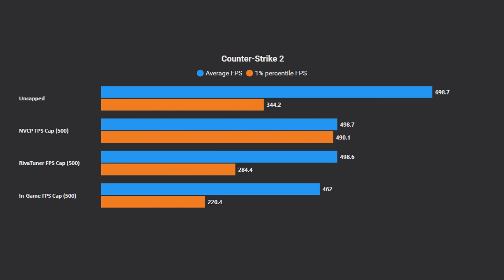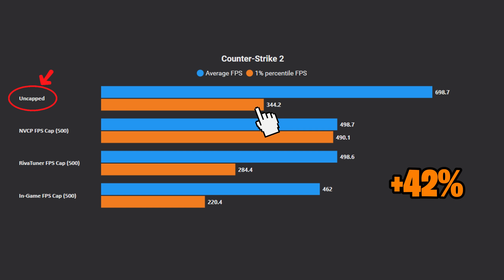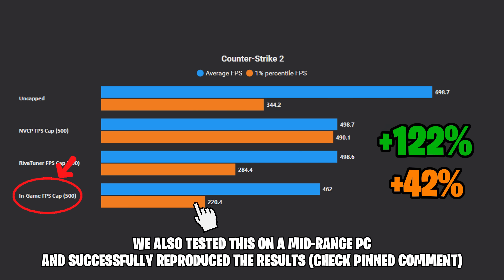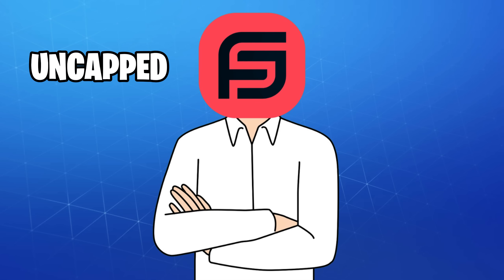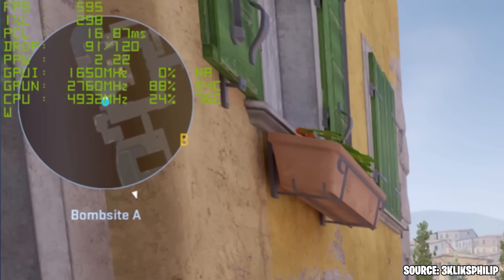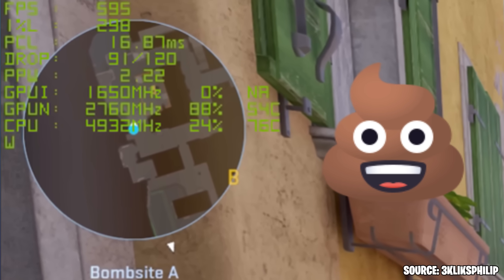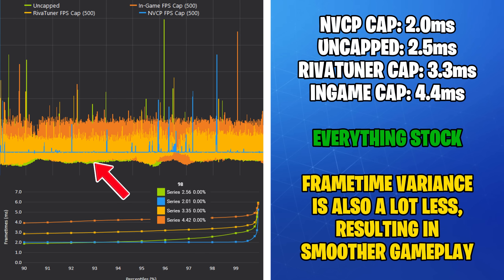The 1% lows improvements we had were up to 42% when compared to uncapped, and a massive 122% when compared to an in-game cap. So if you're still running uncapped or using an in-game cap and wonder why your game feels like an absolute poop, this might just be it. We'll also have a look at the frame times, and you can clearly see the frame time variance was reduced by a lot, which in turn will make your game feel smooth and your mouse movement much more consistent.